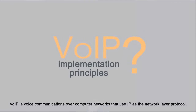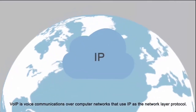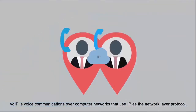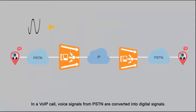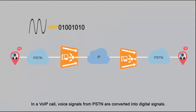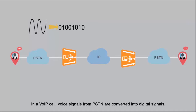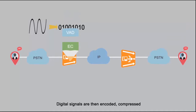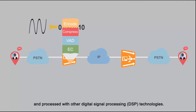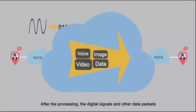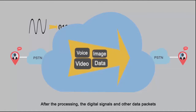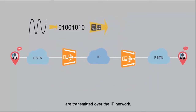VOIP is voice communications over computer networks that use IP as the network layer protocol. In a VOIP call, voice signals from PSTN are converted into digital signals. Digital signals are then encoded, compressed and processed with other digital signal processing technologies. After the processing, the digital signals and other data packets are transmitted over the TCP/IP network.